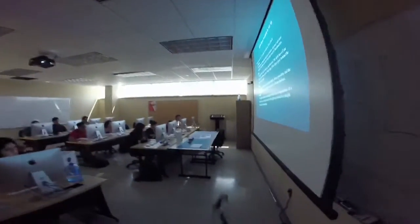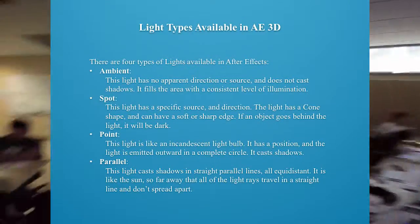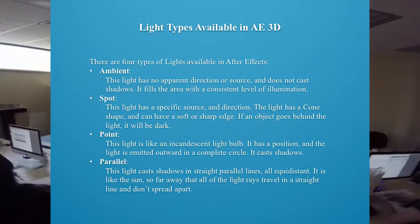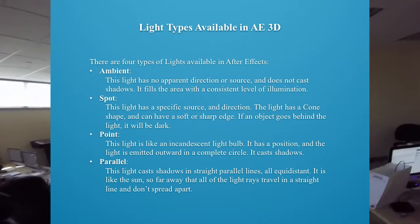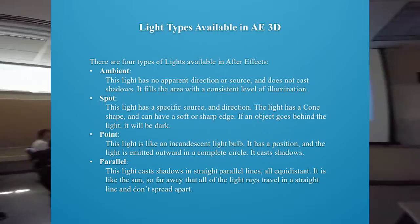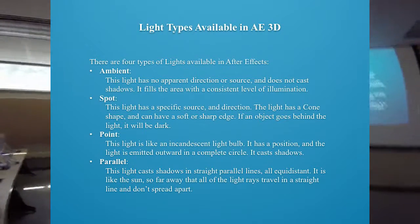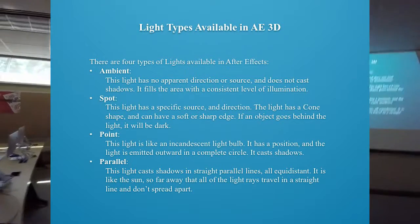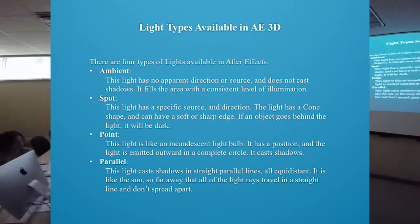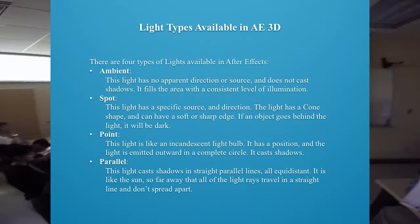Light types. We've used the ambient and the spot. The ambient light has no apparent direction or source — it doesn't cast shadows. It just fills the whole area with a consistent level of illumination, so everything is about the same lightness. That makes it a fill light so you don't end up with shadows from different spotlights, and you avoid having a big black area.